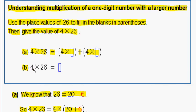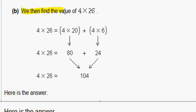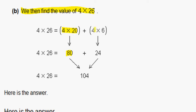Then we can get B. 4 times 26 equals blank. We then find the value of 4 times 26. We know that 4 times 20 is 80 and 4 times 6 is 24. Then we add them together and get 104.